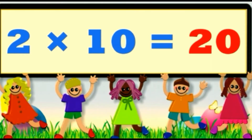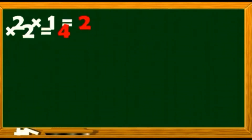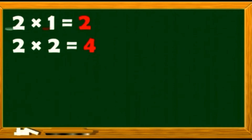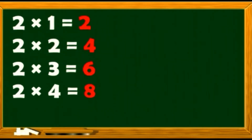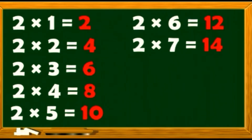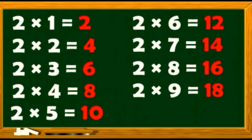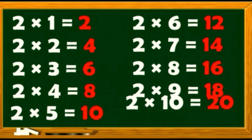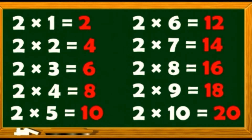Let's do it one more time. 2 1s are 2. 2 2s are 4. 2 3s are 6. 2 4s are 8. 2 5s are 10. 2 6s are 12. 2 7s are 14. 2 8s are 16. 2 9s are 18. 2 10s are 20. Well done children!